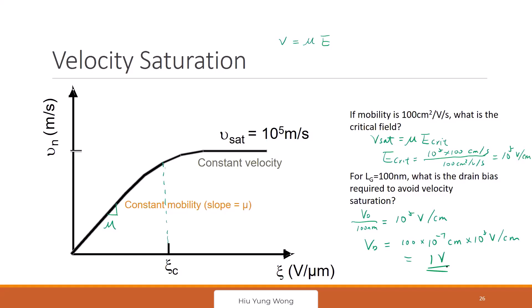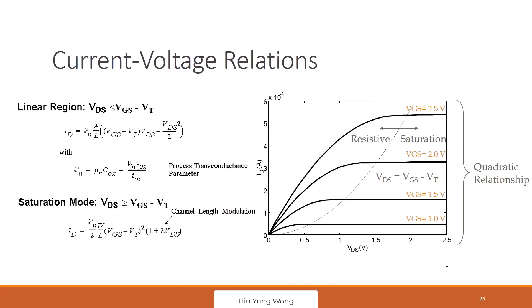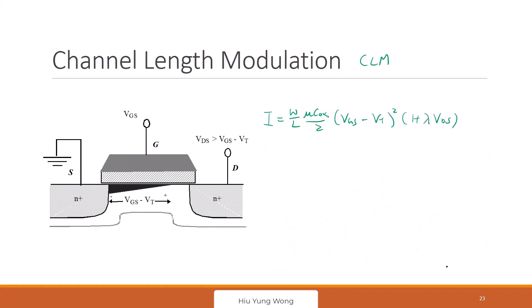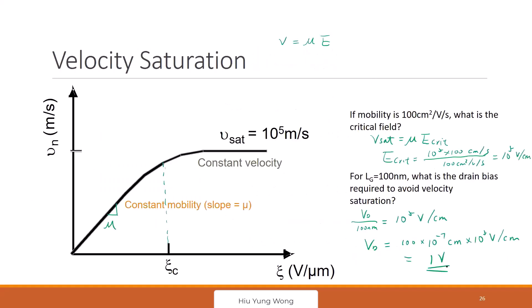So what is the conclusion of today's class? All you have learned are wrong. Because I've been assuming constant mobility when I derived this equation. But now we are dealing with very short channel, 100 nanometer or smaller, we need to consider the saturation velocity. So we will continue in the next class. Let me know if you have any questions.